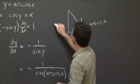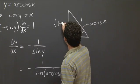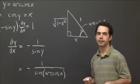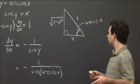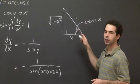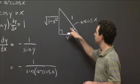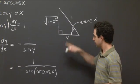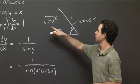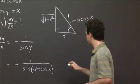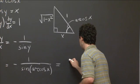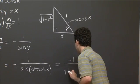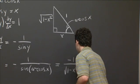That's the length of the opposite side. So the sine of arc cosine of x is square root of 1 minus x squared divided by 1. So sine of arc cosine of x is just square root of 1 minus x squared. So we can write this in the somewhat nicer form minus 1 over the square root of 1 minus x squared.